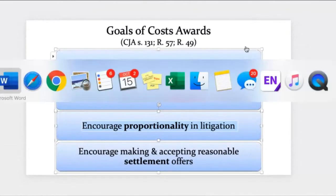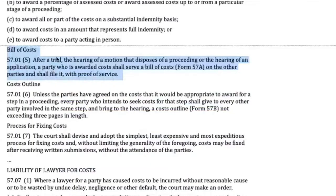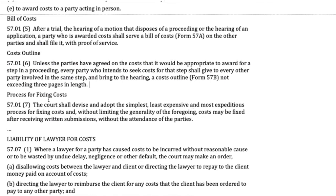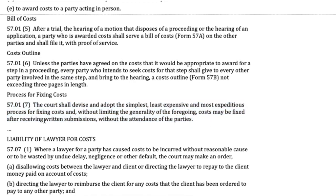The bill of costs can be used after a trial, after the hearing of a motion to dispose of a proceeding — say a disposition without trial motion. You put this forward and submit a cost outline with submissions on the question of costs. Rule 57.01(7)(7) says the court should devise and adopt the simplest, least expensive, and most expeditious process for fixing costs, and that may involve written submissions without the attendance of parties. As always, we've got this tension: trying to be fair, hear both sides, ensure procedural justice — but the process for creating the cost award can very quickly become a huge source of additional cost itself.